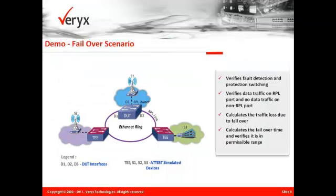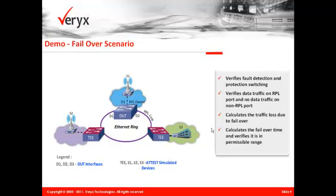An illustrative explanation of this failover behavior is seen here. In this scenario, the device under test is configured to be the RPL owner. ADDIST sends periodic CCM messages to enable steady state. The ring protection link is blocked under normal conditions, making the received traffic flow from S1 to S2 and S1 to S3 via the non-ring protection link.